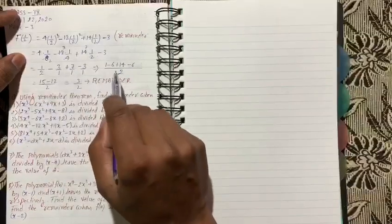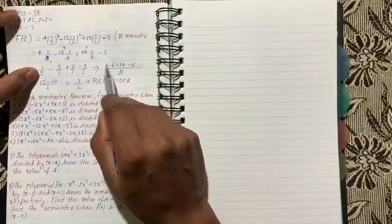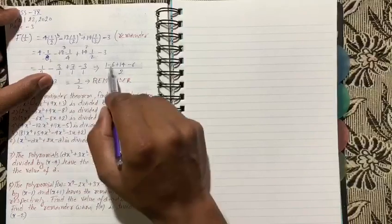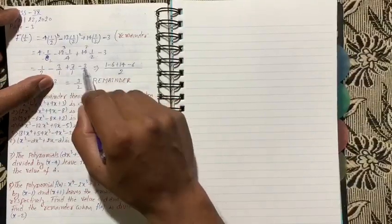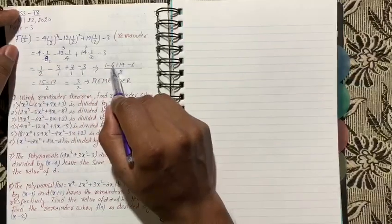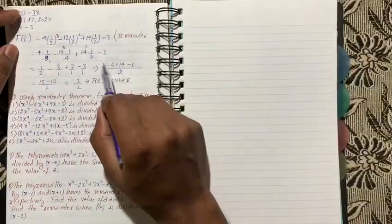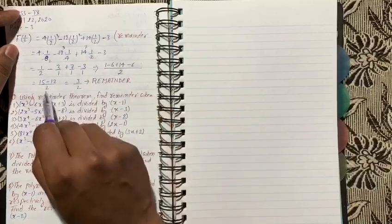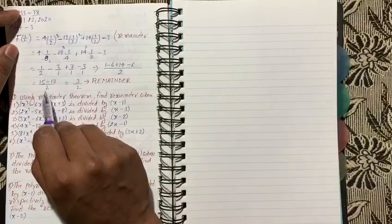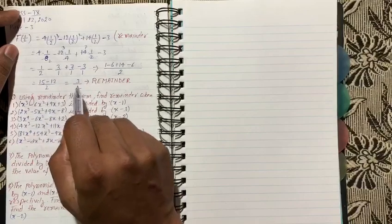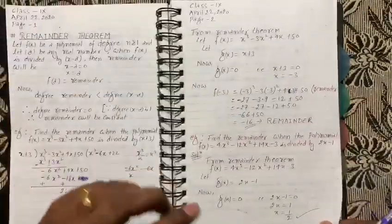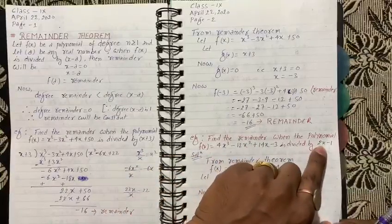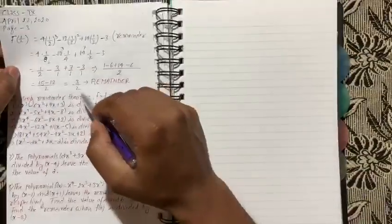Taking the LCM of all terms — LCM of 2 and 1 is 2. So we get: 1 minus 6 plus 14 minus 6, all over 2. Combining: minus 6 and minus 6 gives minus 12, and 14 plus 1 gives 15, so we have 15 minus 12 over 2, which gives remainder 3 by 2. This means when this polynomial is divided by (2x minus 1), the remainder is 3/2.